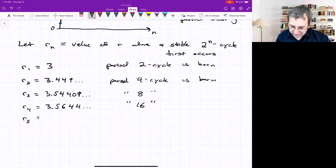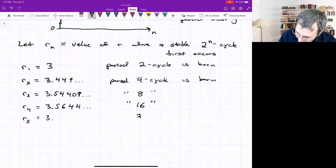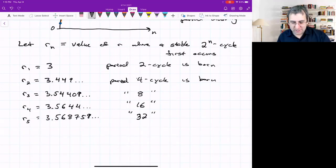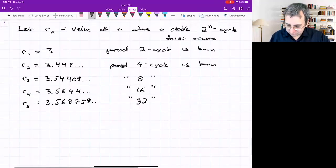What's going on with this sequence? It's looking like it's converging to something. R_5, where there's a 32-cycle, is 3.568759. It looks like it's converging to something close to 3.57. It actually is.